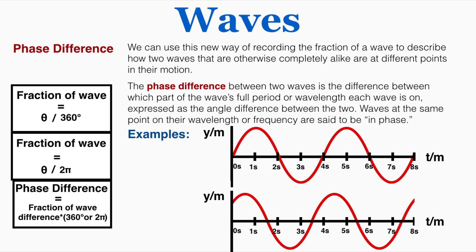This is a displacement time graph but the exact same rule still works for finding the phase difference. I just need to compare the difference in the waves and I can see that this is a difference in 7 eighths of the wave. So to find the phase difference I just multiply 7 eighths by 360 or 2 pi and that gets me a phase difference of 315 degrees or 7 pi over 4.